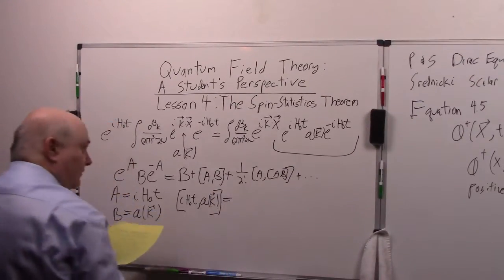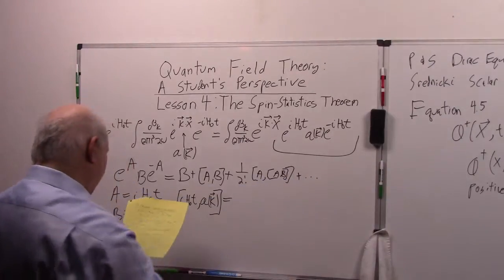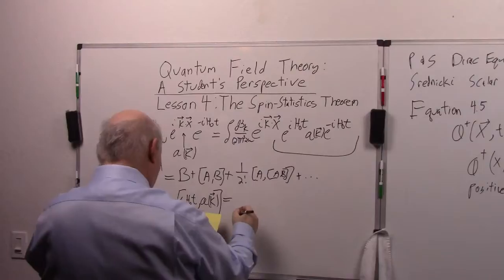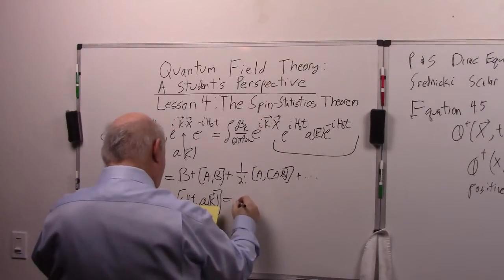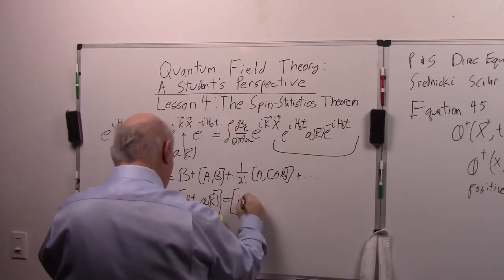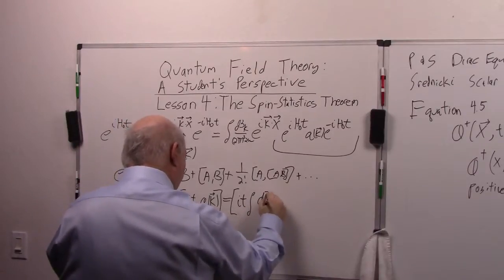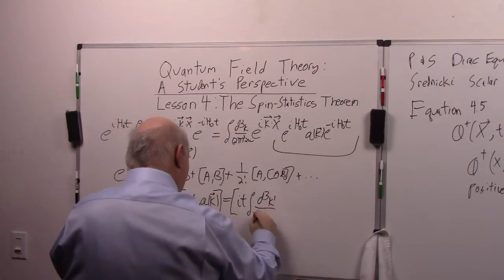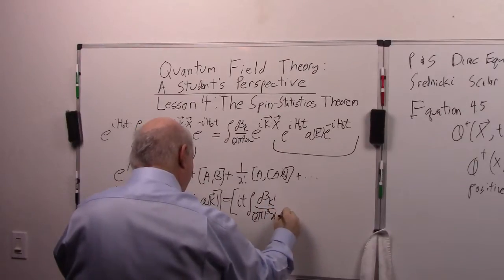And substituting our definition of that field Hamiltonian that we have there, this is simply equal to commutator IH∂T integral d³k' over 2π³ 2ω'.